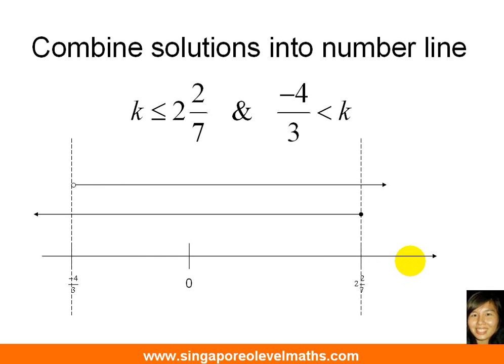So this is how we go about drawing the number line. This is the main number line here. I put in where the zero is. I put in the key numbers. Negative 4 over 3 will be on the left hand side. 2 whole 2 over 7 will be on the right hand side. And I start drawing my first number line for k less than or equal to 2 whole 2 over 7.